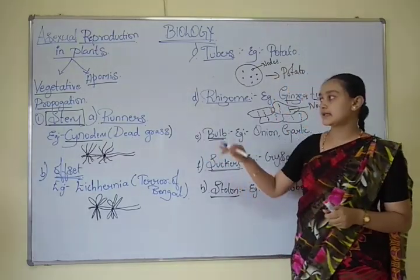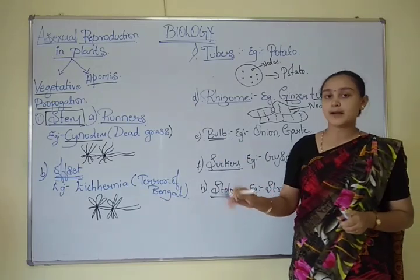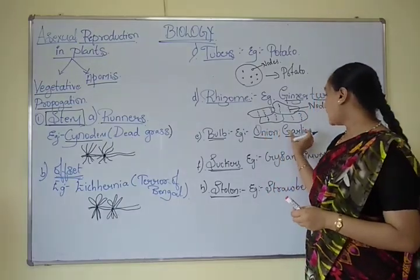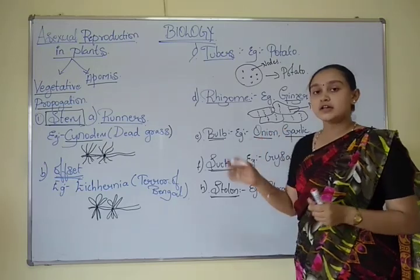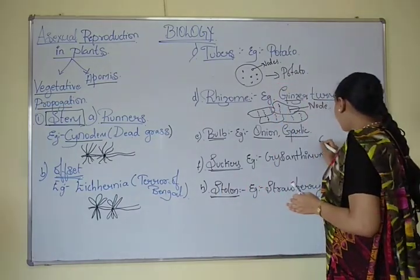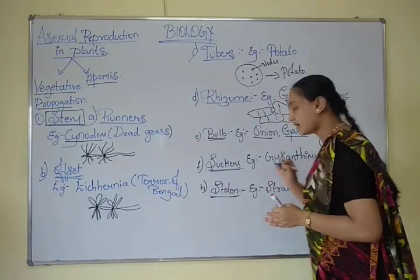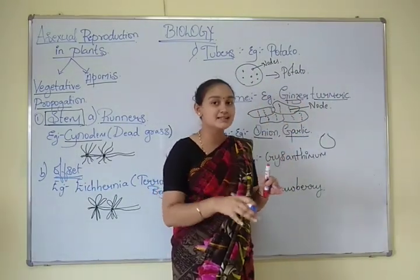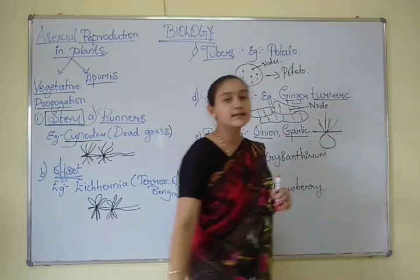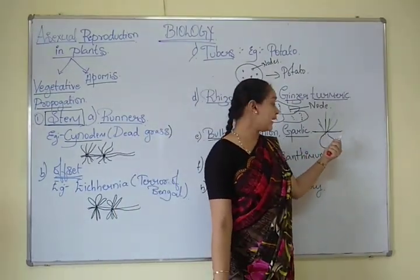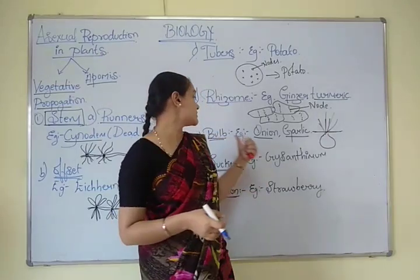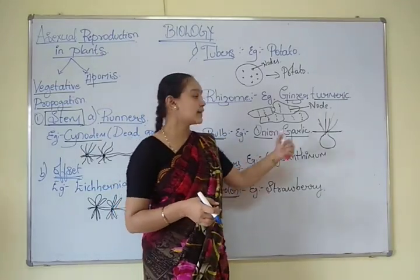The next type is bulb. The examples are onion and garlic. The onion that we consume is the stem part — a bulged, disc-like structure present inside the soil — which gives rise to leaves. When this bulb-like structure comes into contact with the soil, it develops into a new plant.